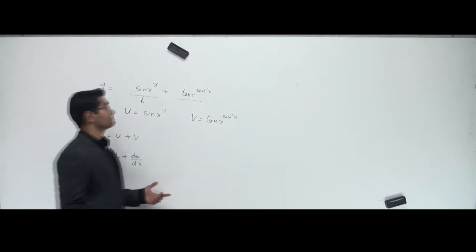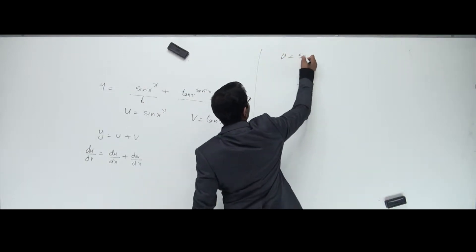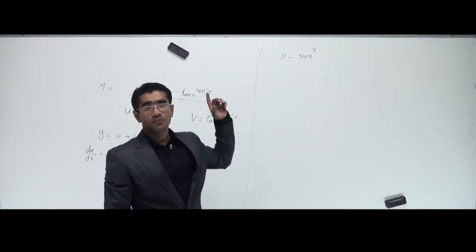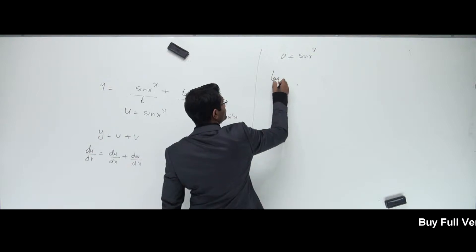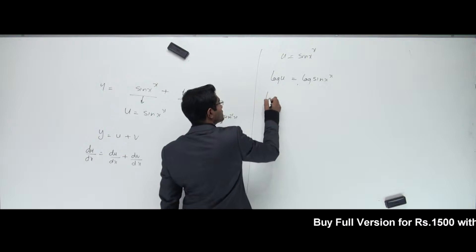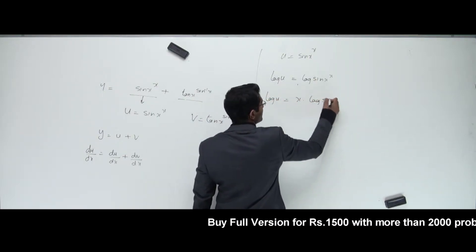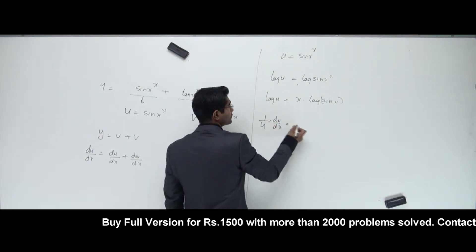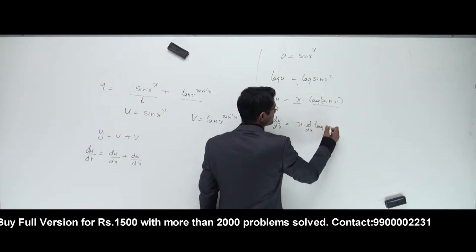To find du/dx, I go back to u = sin x to the power x. Now I can use log on both sides since it's a single function. That gives log u = log of (sin x)^x, which becomes log u = x · log(sin x). Differentiating both sides: 1/u · du/dx on the left, and on the right I apply the product rule — x · d/dx(log sin x) plus log(sin x) · d/dx(x).